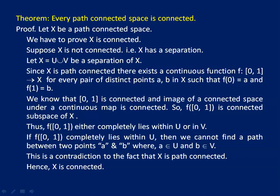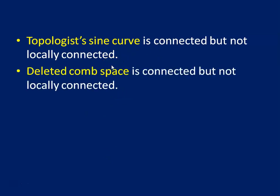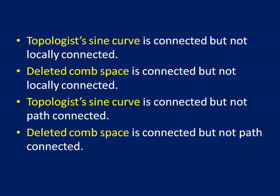Since every path connected space is connected, the question arises whether connected spaces are path connected or not. Obviously, connected spaces are not always path connected. The topologist's sine curve is an important example: it is connected but not locally connected. The deleted comb space is also an important example which is connected but not locally connected. We are going to discuss the deleted comb space, which is connected but neither locally connected nor path connected.